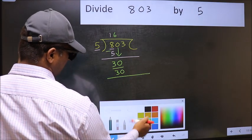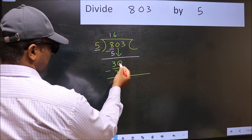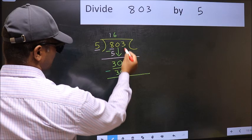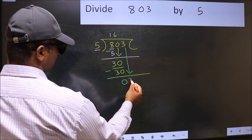Now you should subtract. 30 minus 30, 0. After this, bring down the beside number. So, 3 down.